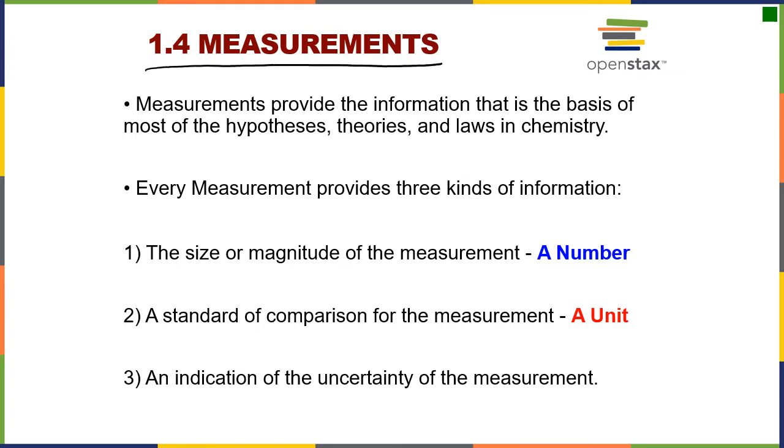In order to do science, we have to make measurements. When we make a measurement, we've got to be really clear on what we're talking about. Every measurement provides some information: the magnitude of the measurement, which is the number; a standard of comparison for that measurement, which is the unit; and an indication of how well we know the measurement, which is its uncertainty.